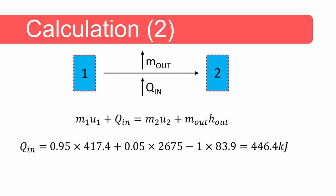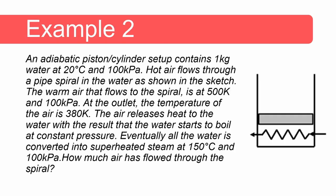M2 equals 0.95 kilograms. From the steam tables, the internal energy of saturated water at 100 kilopascals is 417.4 kilojoules per kilogram. M_out is five percent of the initial mass, and the enthalpy is that of saturated steam at 100 kilopascals. The water is initially subcooled, but we assume its internal energy equals that of saturated liquid water at 20 degrees Celsius. Calculating Q gives 446.4 kilojoules.